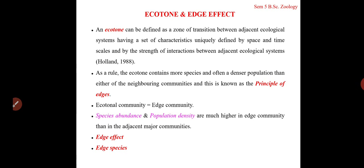The ecotone is unique — it is different from what we find in a coniferous forest and different from what we find in a water body community. It has unique features. The community in the ecotone area is known as the ecotonal community. This transition zone is also described as a tension belt, since competition for resources is very severe there.